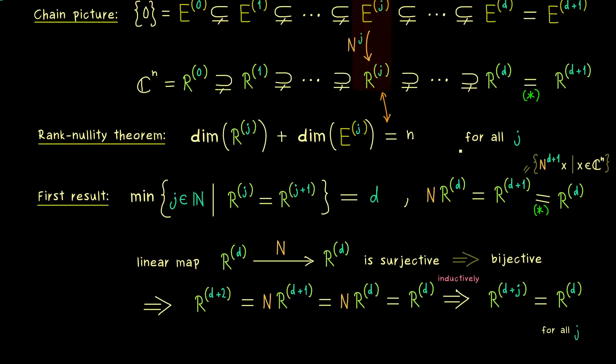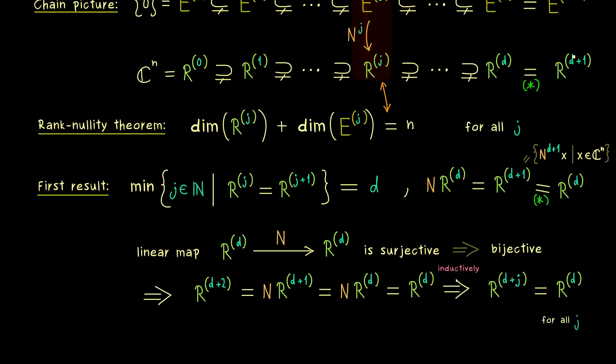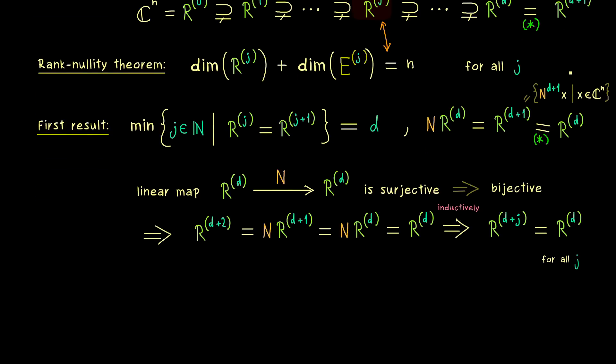And moreover, this result completely translates to our E-spaces as well. Again, the rank-nullity theorem simply tells us that the equalities have to be at the same spots. And this is a really nice result, because it tells us how our generalized eigenspaces behave. Indeed, now we know the whole chain already ends with the fitting index, which was the minimum anyway.